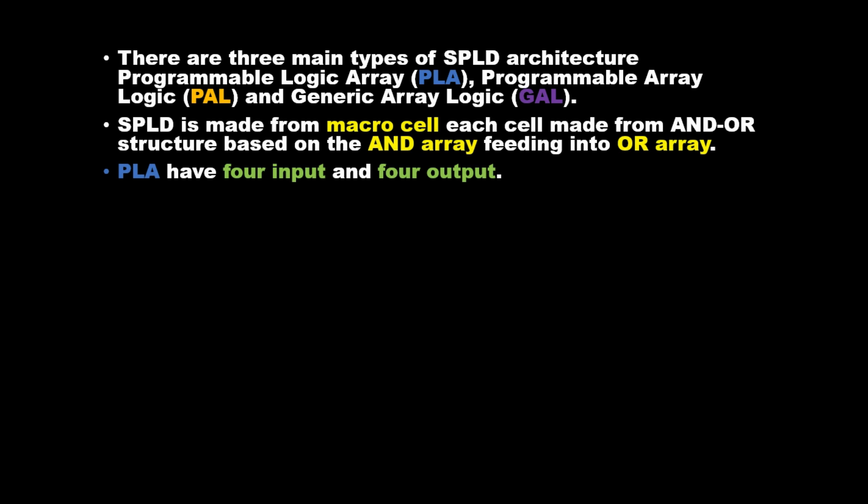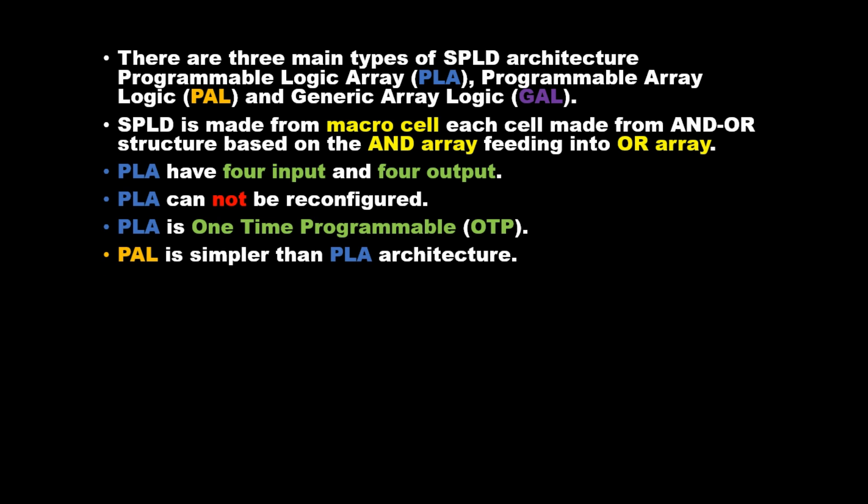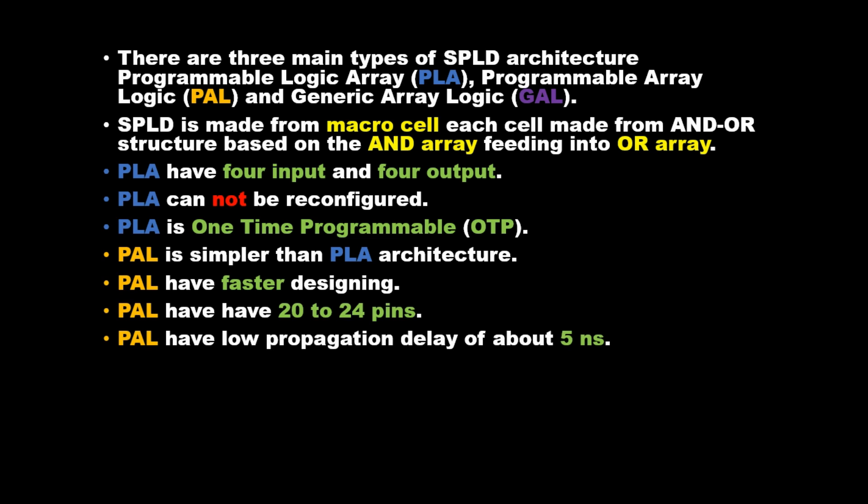PLAs have four inputs and four outputs. PLAs cannot be reconfigured and are one-time programmable. PAL is simpler than PLA architecture. PAL has faster designing, 20 to 24 pins, and low propagation delay of about 5 nanoseconds.